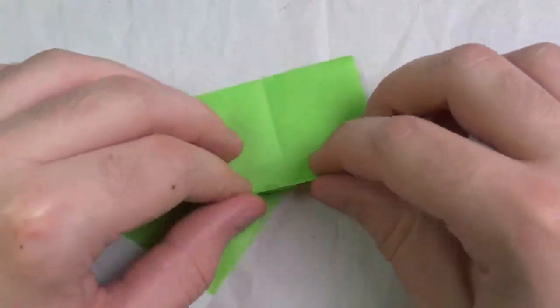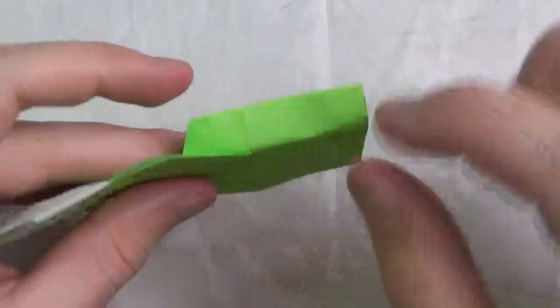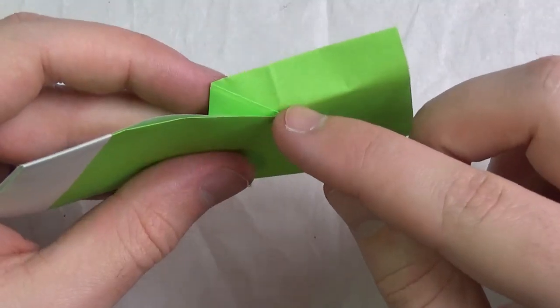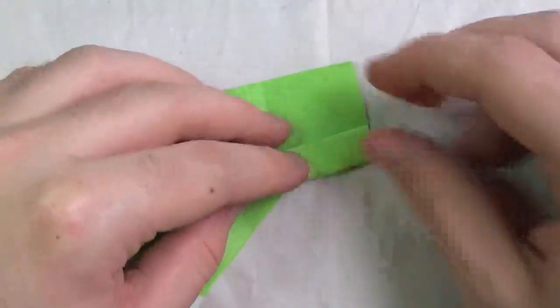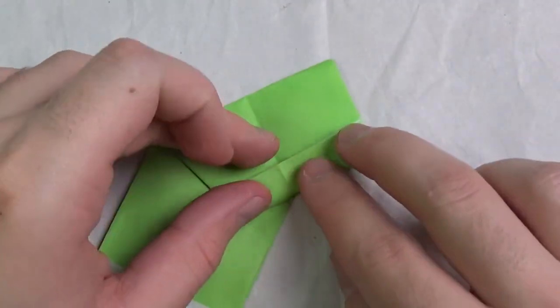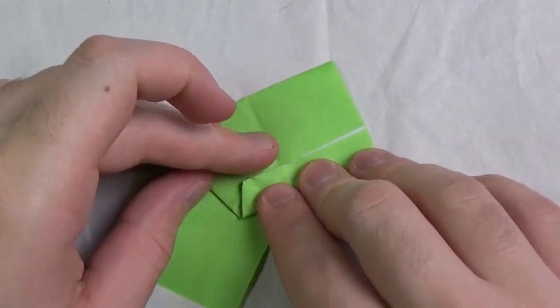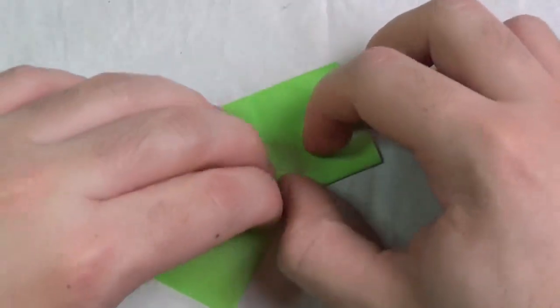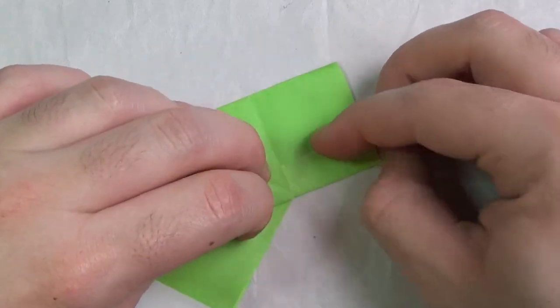Okay. And now turn over. And now we're going to fold this up. And we're going to fold it up right on that point right there. And we want the edges to align right here. See? Just like this. And crease that sharply.